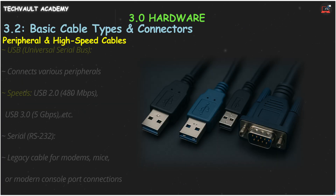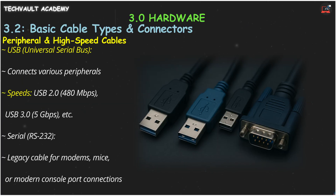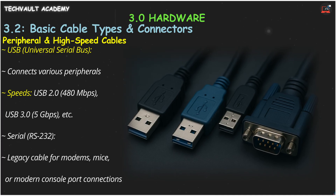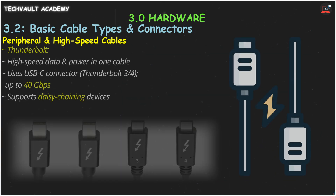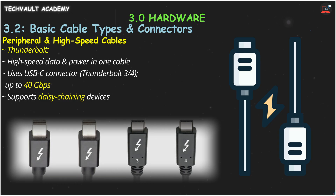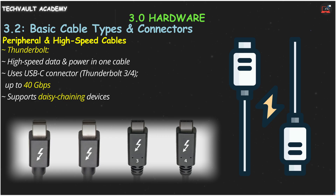Next, peripheral and high-speed cables. USB — Universal Serial Bus — is the king here, with versions like USB 2.0 at 480 megabits per second and USB 3.0 at 5 gigabits per second. Legacy serial cables using the RS-232 standard are now mainly used for configuring older network equipment via a console port. Thunderbolt is a powerhouse, bundling high-speed data and power into one cable. Thunderbolt 3 and 4 use the versatile USB-C connector and can achieve 40 gigabits per second, even allowing you to daisy-chain multiple devices.